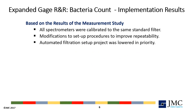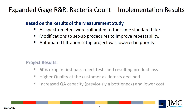To reduce the gauge-to-gauge variation, all gauges in the quality assurance department were standardised to the same filter. Measurement setup procedures were modified and standardised to improve repeatability. And finally, because the technician variability was low, a project to automate the technician's role was eliminated, thus preventing this non-value-add activity.